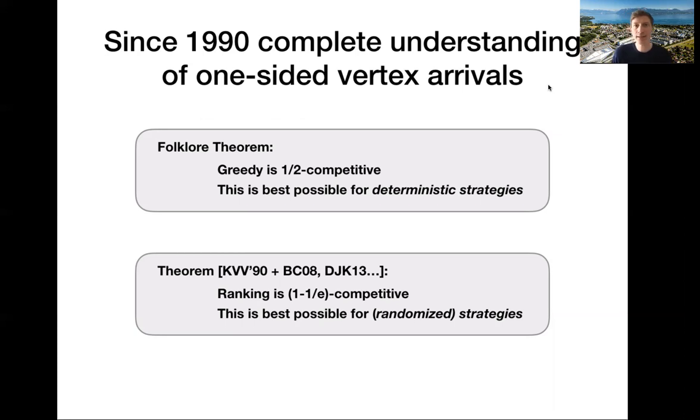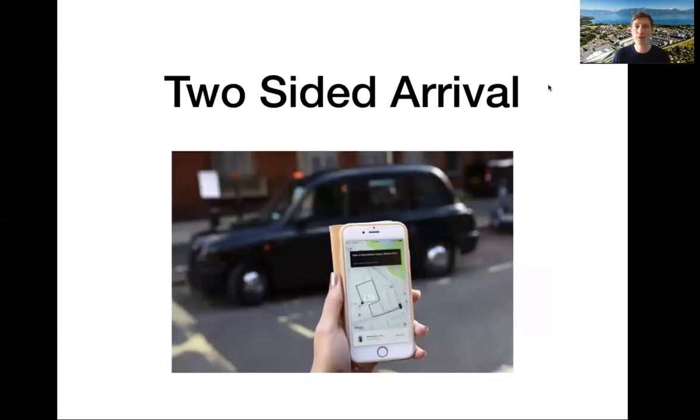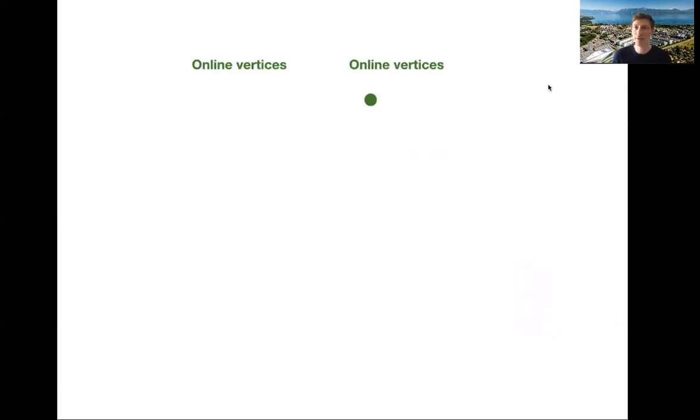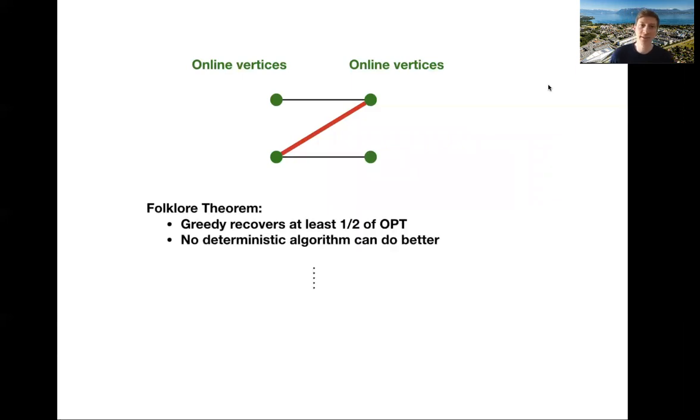But what can we do more? Well, it seems a little bit restrictive to only look at one side vertex arrivals. So what about more general arrival models? You could think of, in Uber, both the clients and the drivers arrive online and we need to match them. So you have two side vertex arrivals. Vertices arrive online on both sides. So when a vertex arrives, you see the edges to already arrived neighbors and you need to make a decision. Maybe we run greedy so we match it. Now other guys come. So guys come in both sides. If you think for a while, it's not hard to see that the deterministic greedy algorithm still recovers half of opt. So it's half competitive and it's the best you can get with any deterministic strategy.